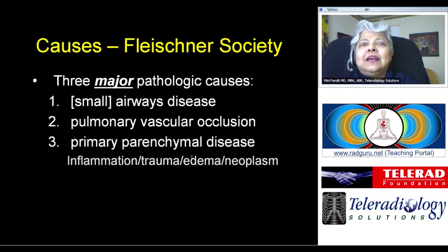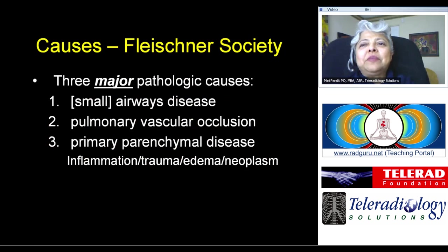My suggestion to all of you would be to drop the word mosaic and instead just use the term heterogeneous lung attenuation when you encounter this entity. The Fleischner Society also put forth three major pathologic causes for heterogeneous lungs: small airways disease, pulmonary vascular occlusion, and primary parenchymal disease.